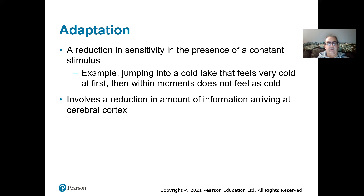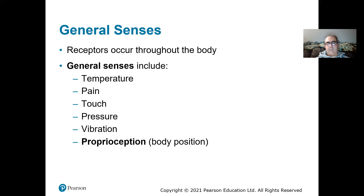Basically there's a reduction of the amount of information arriving at your brain because you're not doing anything about it. You jump into a cold lake, your brain immediately says it's too cold, get out. If you don't get out, after a while your brain says okay, I guess we're staying here and starts ignoring that sense. Before we talk about these senses, we have to distinguish between general senses and special senses. General senses are brought about by receptors that occur all throughout the body — things like temperature, pain, touch, pressure, vibration, and proprioception, which is knowing your body's position in space.